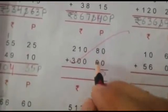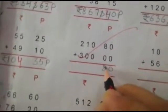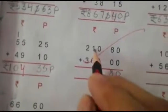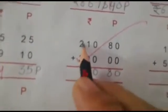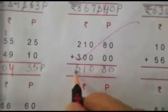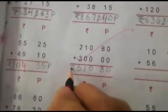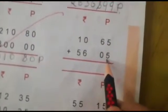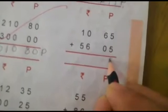Next: 8 plus 0 is 8, 0 plus 0 is 0, 1 plus 0 is 1, 2 and 3 gives 5. 210 rupees and 80 paise.